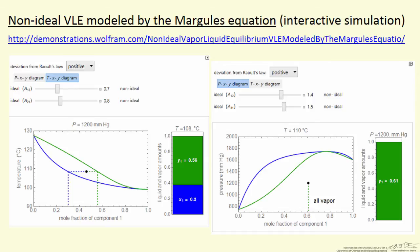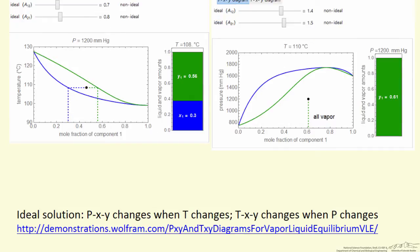Instead, there are other simulations for ideal cases that you can look at. I've indicated the location of simulation here for ideal solution where you can change the temperature in the PXY diagram to look at how the plot changes, and you can change the pressure in the TXY diagram. That's not done here for these non-ideal solutions.